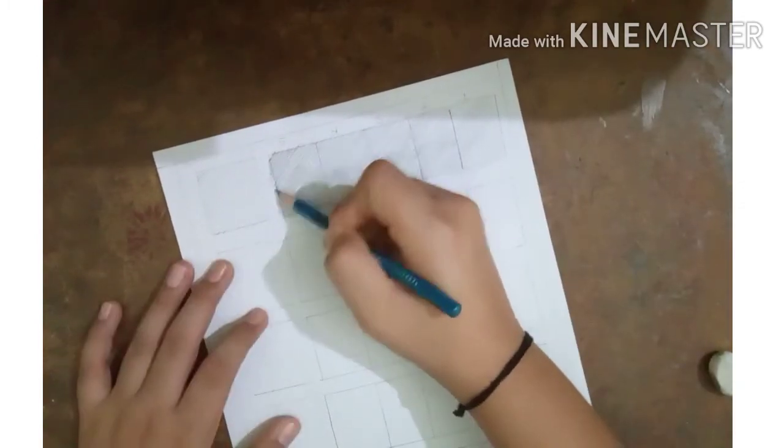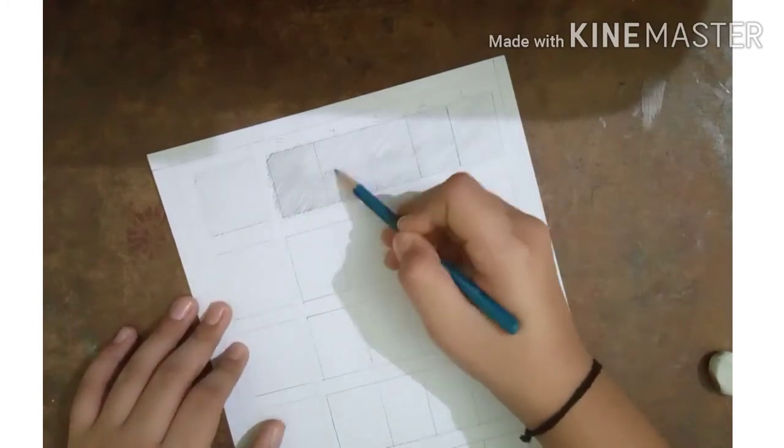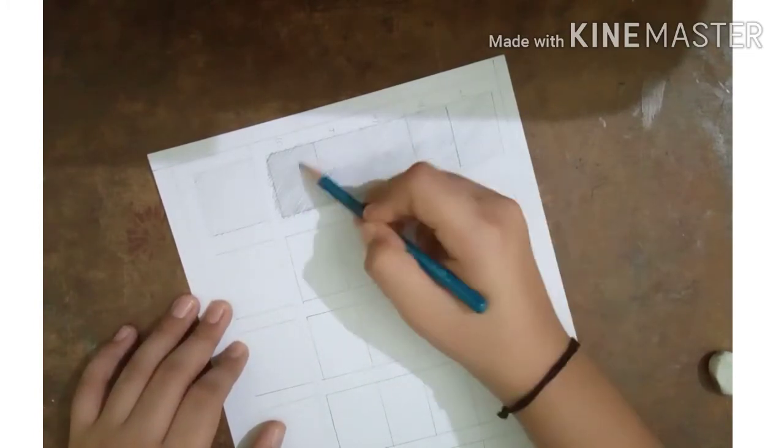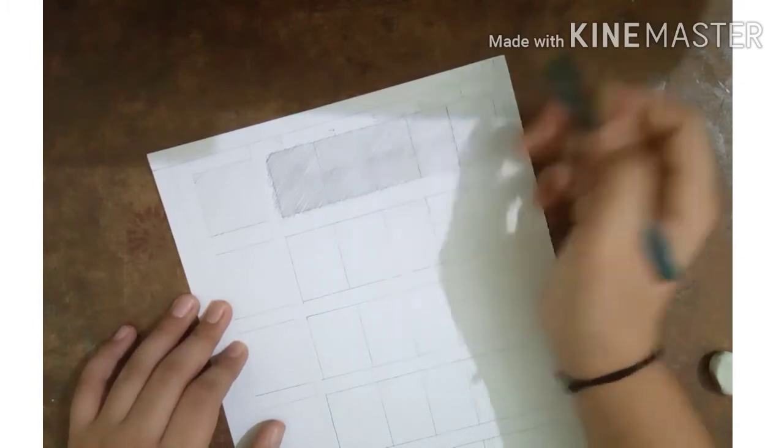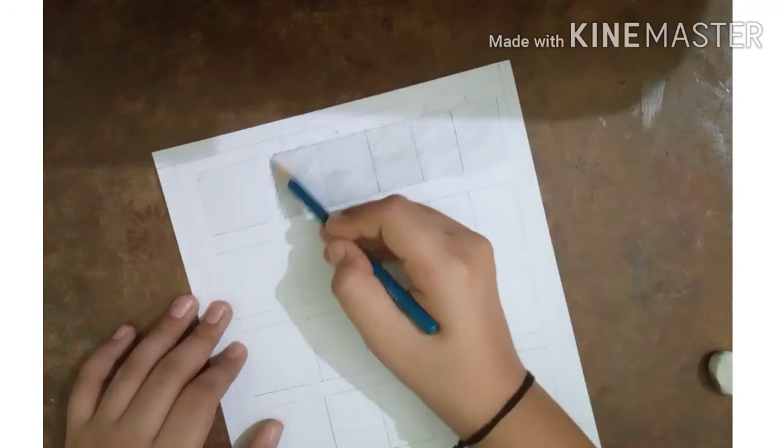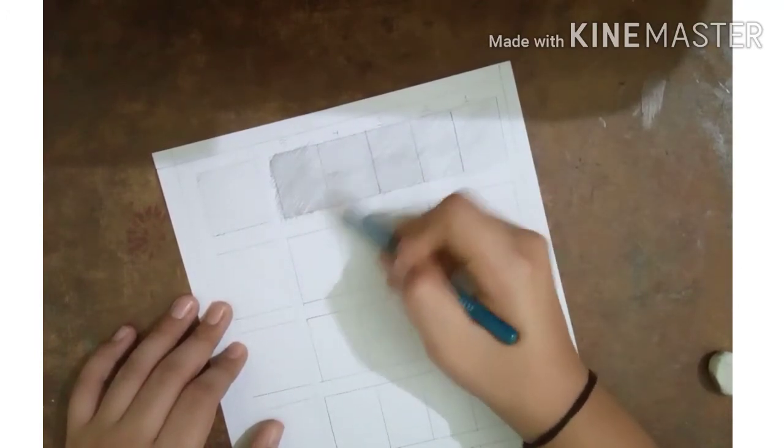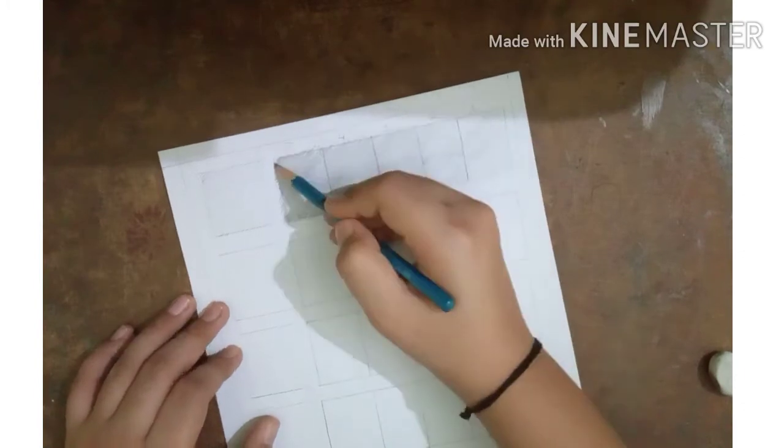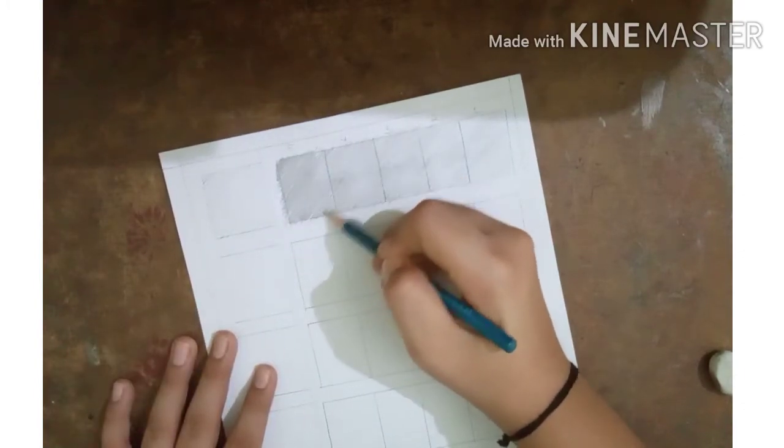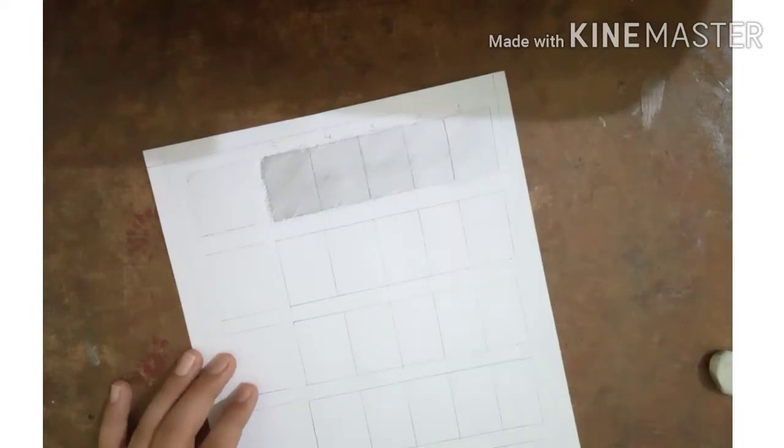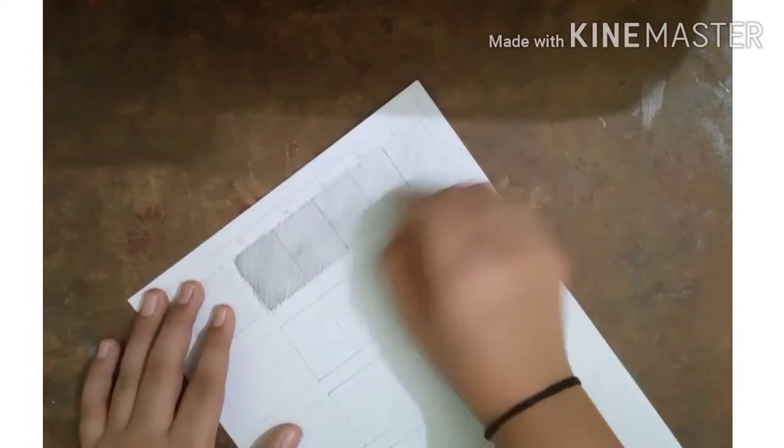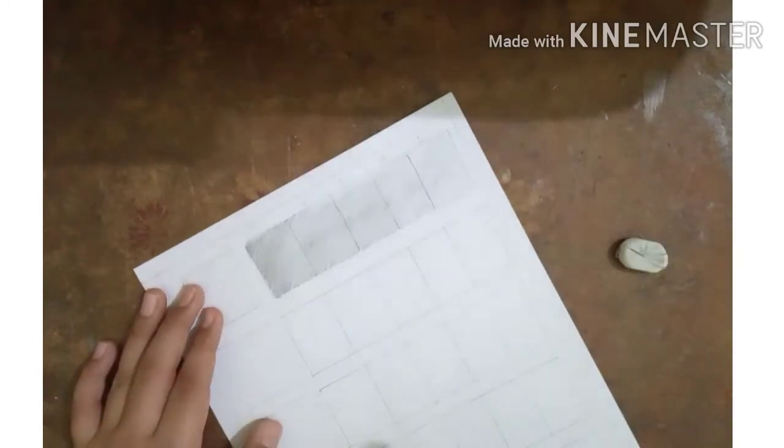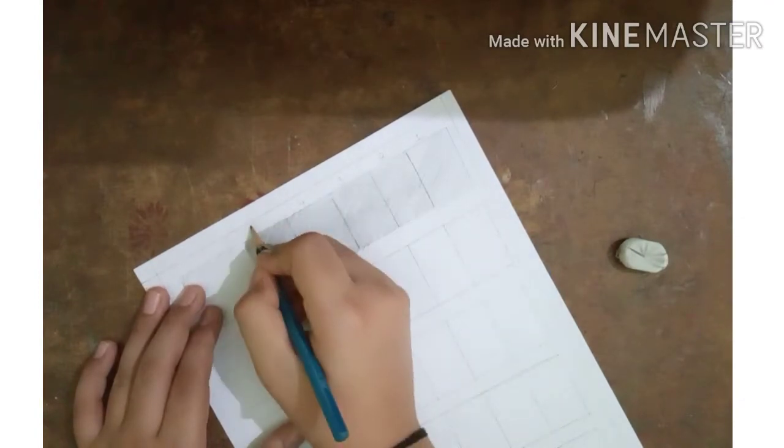Repeat the same method for shading in the second box. Remove the extra lines of the box using an eraser. Now we have completed shading diagonal lines.